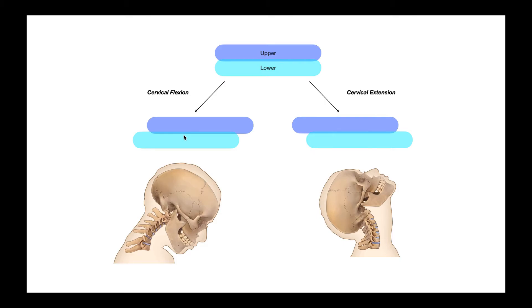During cervical extension — bending the head backward — the intervertebral movement causes the anterior vertebral bodies to separate and the spinous processes to approximate. But we gain added range of motion because the upper half of the disc translates posteriorly relative to the lower half. These translatory movements of the bipartite disc during flexion and extension increase the overall range of motion, and this is part of what makes the cervical spine the most mobile segment of the spine.